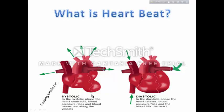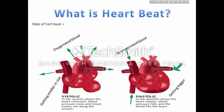contraction of the heart; diastole means relaxation of the heart. Due to this, our heart receives deoxygenated blood from various parts of our body and also distributes oxygenated blood from the heart to various parts of our body. The heart of a healthy person beats 72 times per minute, and the heart of a resting human being pumps about five liters of blood per minute.